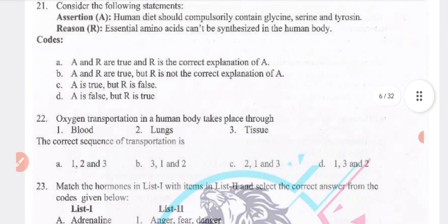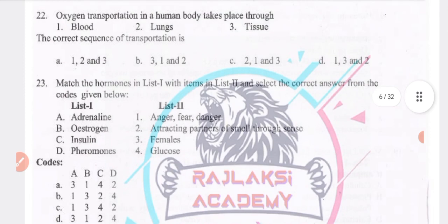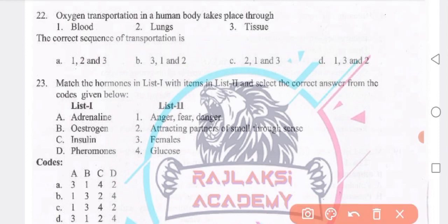Next question: oxygen transportation in the human body takes place through which sequence? The answer is: lungs, then blood, then tissue.